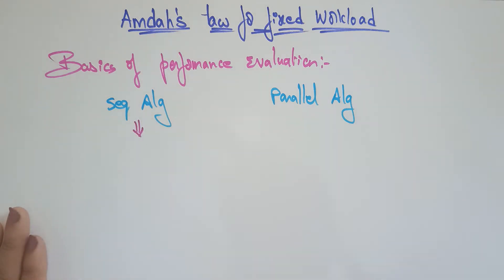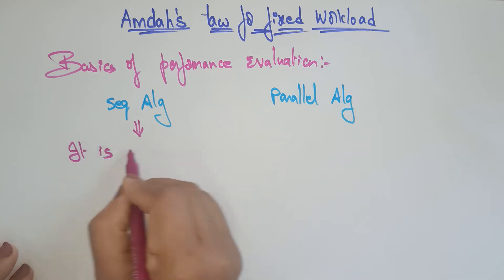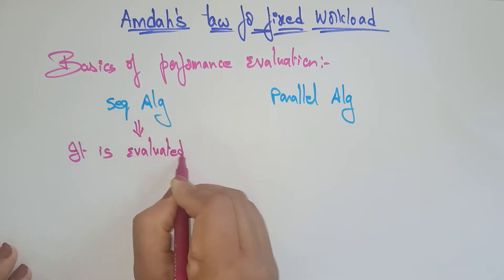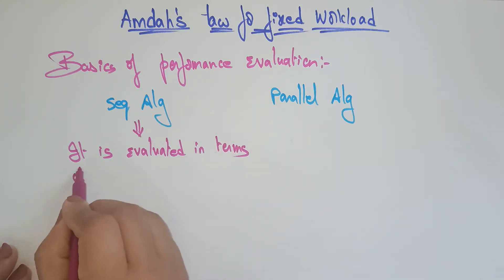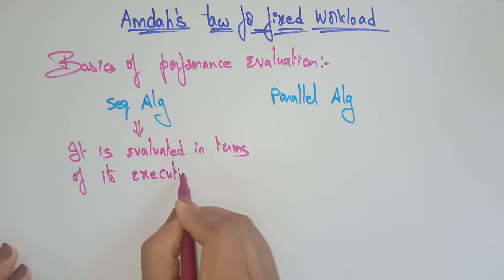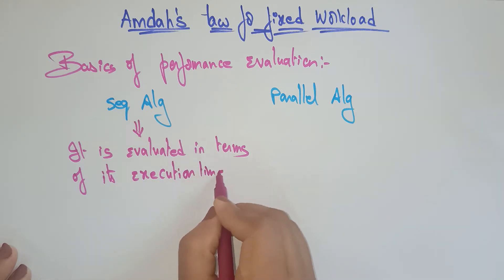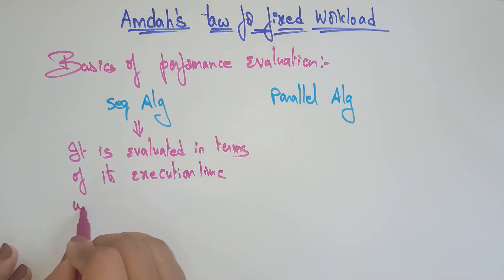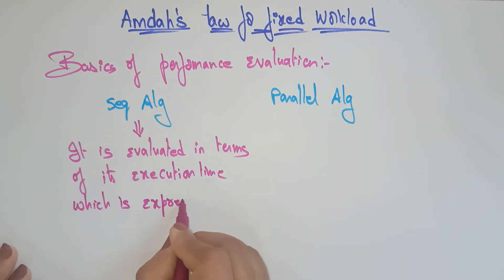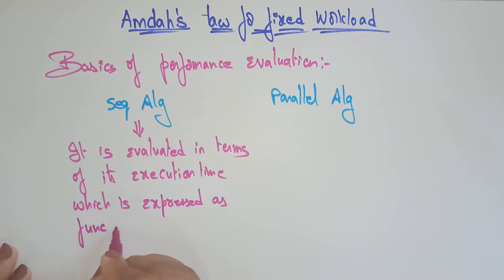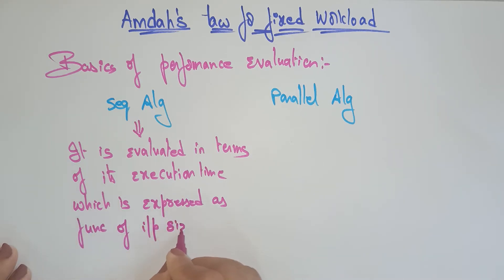A sequential algorithm is evaluated in terms of its execution time — meaning how much time it is taking to complete the process. This execution time is expressed as a function of input size. It is completely based on your input size: how much input you are giving to the process and how much time the process takes to execute it. So this is a sequential algorithm — one after another, it's sequential.